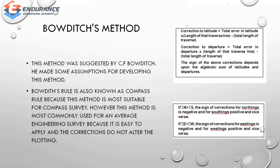The first method is the Bowditch method, also called the compass rule, named after C.E.F. Bowditch. This method is suitable for a compass surveyor. It is used for average length surveys and ordinary work because corrections can be applied easily and do not greatly alter the plotting.